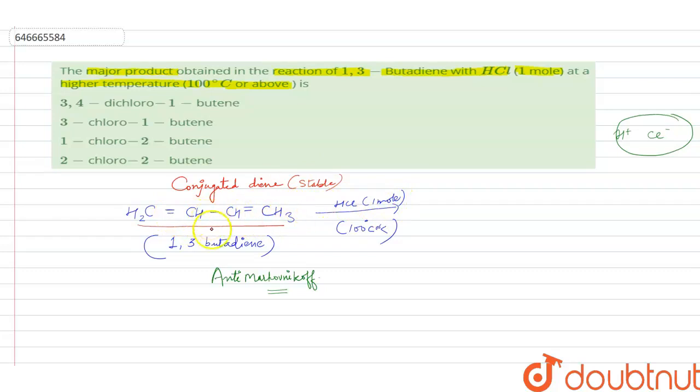So when this 1,3-butadiene is treated with HCl at 100 degree Celsius, these double bonds are broken down and a single double bond will be formed at the middle position. So our product formed will be C-C, this is a simple butene with a double bond.